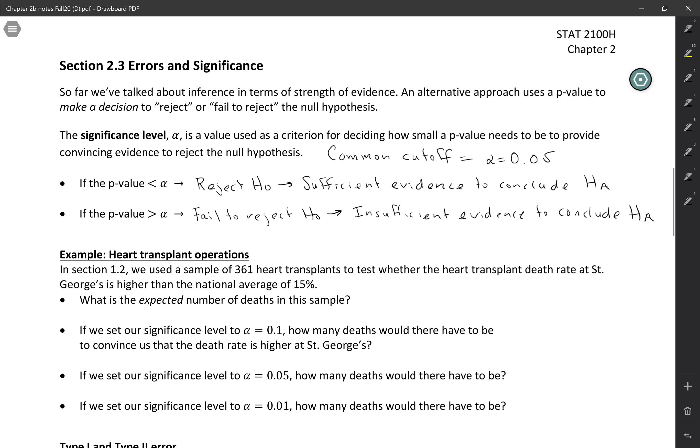And in a Google form, you're going to do an activity to see how exactly the significance level alpha is related to the amount of evidence required.